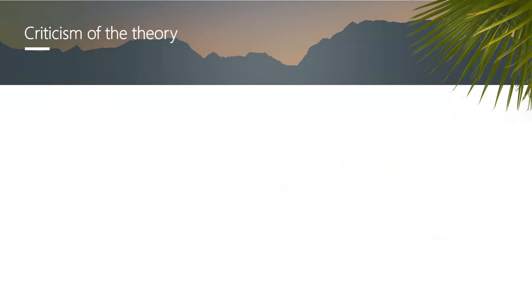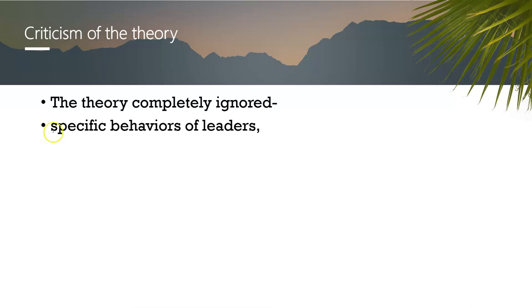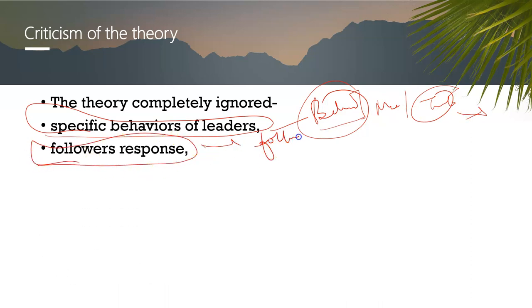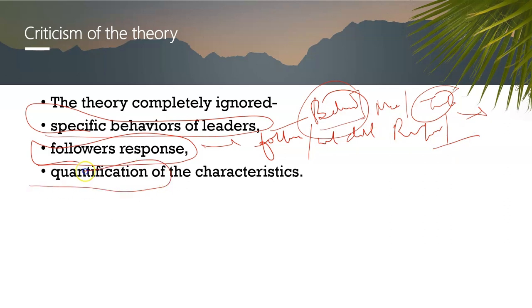Now we'll talk about criticism. No theory is perfect. There are many criticisms here. The first criticism was that this theory completely ignored the specific behavior of the leader. The specific behavior of the leader you have to mention or measure, not just measure the traits. Apart from this, you have to measure your followers' response - the followers' willingness, their ability, their response to their leader or how they rate the traits.